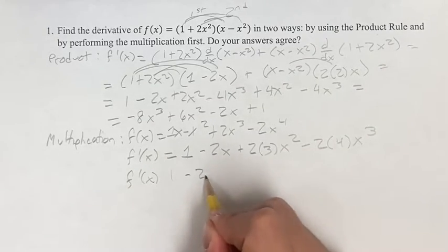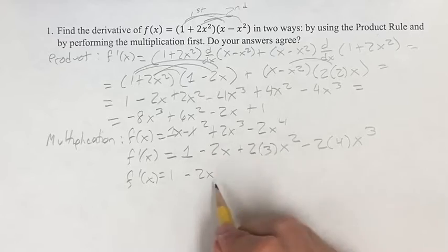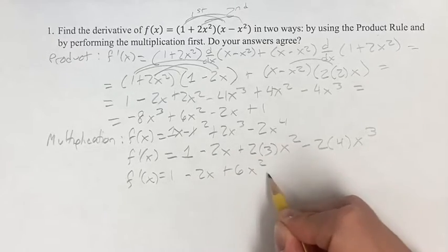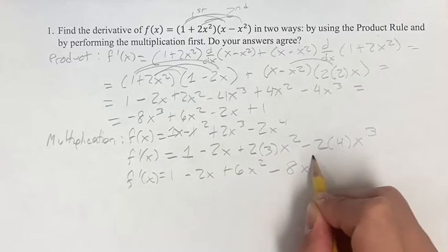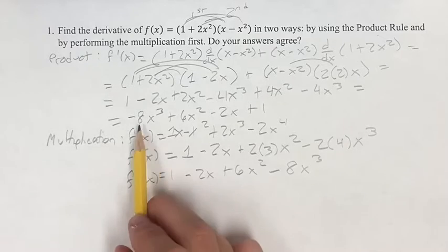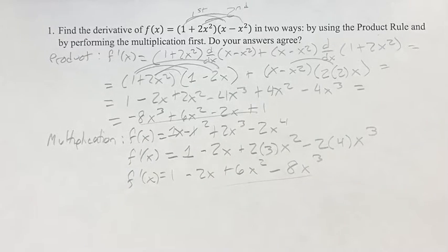...and simplifying this, we get 1 - 2x + 2 times 3 is 6x², minus 2 times 4 is 8x³. And this is equivalent to this, even though they're in slightly different orders. That's just the way it worked out, they are equivalent.